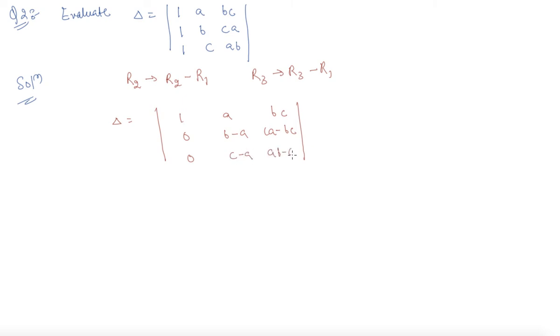Now we can expand along column number one. Simply expanding, delta will become 1 times minus 1 to the power 1 plus 1. So this is (b minus a) times (ab minus bc) minus (c minus a) times (ca minus bc).